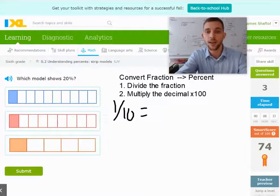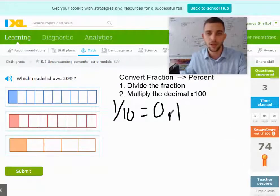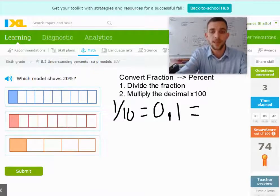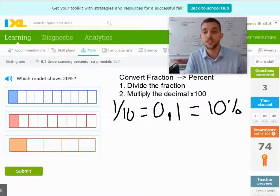And you should have this memorized, but remember last time we did this, this was 0.1, because this is the tenths place right here, and our fraction is 1 tenth. And that's equal to 10 percent, because 10 goes into 100 ten times.